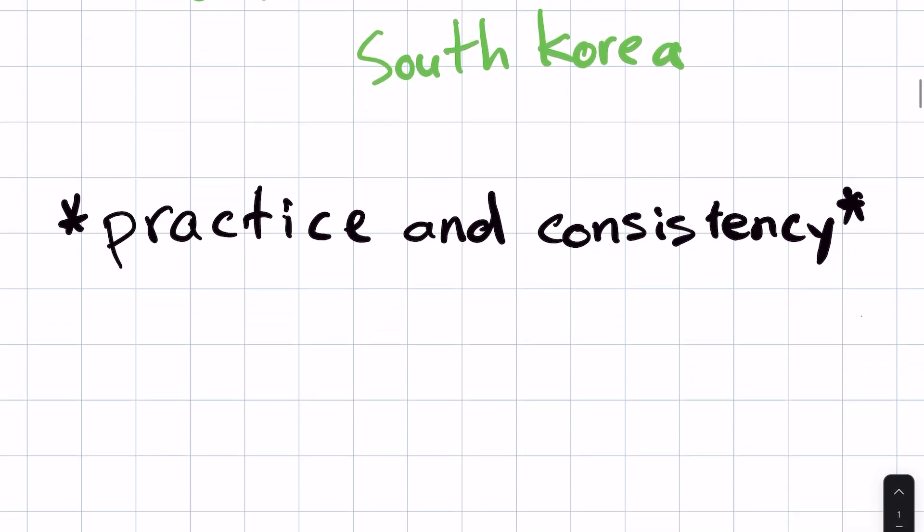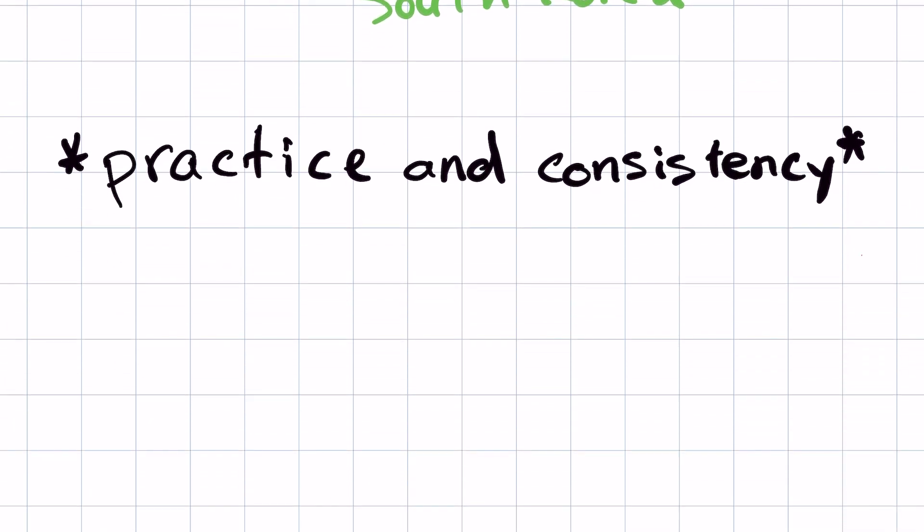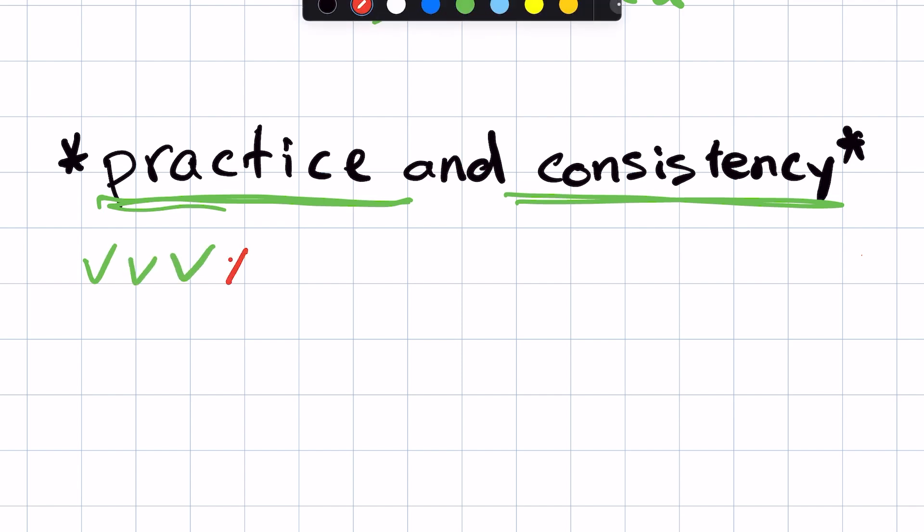And so the key to becoming better at pronunciation is practice and consistency. And so what a lot of people do is they practice for a few days and then they stop for a few days and they start again and then they stop and so on. And so with this way, you cannot make any progress at all. You will stay down here. You will never go up.